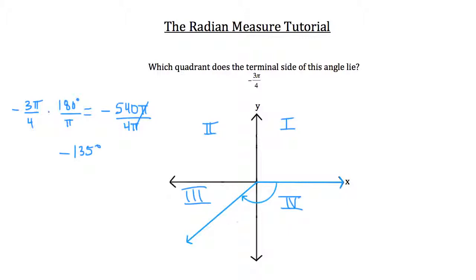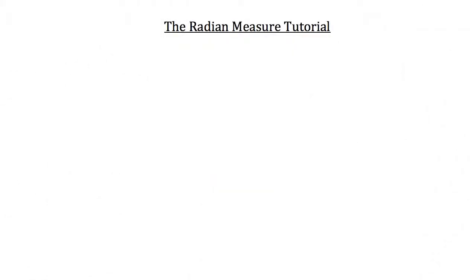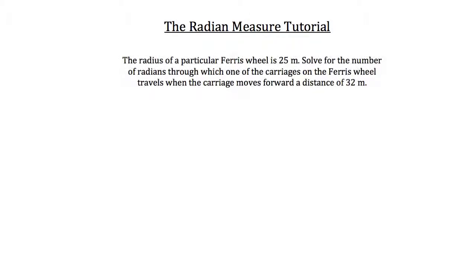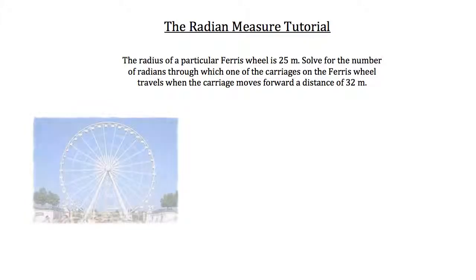It's common when dealing with radian measures to encounter problems about ferris wheels and bicycles, calculating arc lengths and travel distances around wheels. Here's a word problem: the radius of a particular ferris wheel is 25 meters. Solve for the number of radians through which one of the carriages travels when it moves forward a distance of 32 meters. For complex problems like this, it's easiest to draw a figure of what's going on.